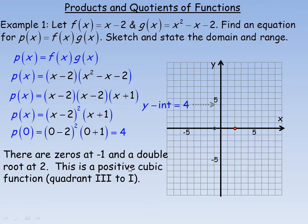p of x is also a positive cubic function. Expanding, the highest power of x is x squared times x giving x cubed, with a positive coefficient of 1. Positive cubic functions start in the third quadrant and end passing through the first quadrant — they have that general cubic shape.